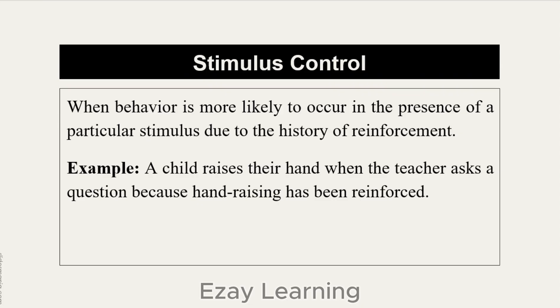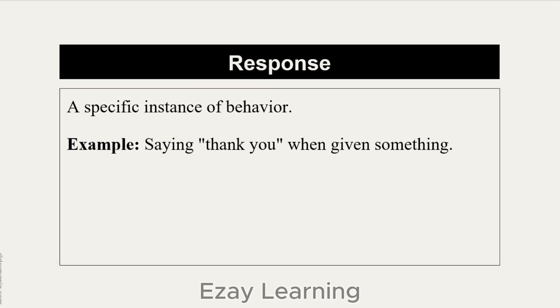Stimulus control refers to the history of reinforcement — that a particular behavior was already reinforced in the presence of a stimulus, giving it control. For example, hand-raising was reinforced in a class, so the child learns to raise their hand; this is stimulus control. Response is a specific instance of behavior — for example, someone gives you something and you say 'thank you.' That is a response. Lots of individual responses make up a behavior.